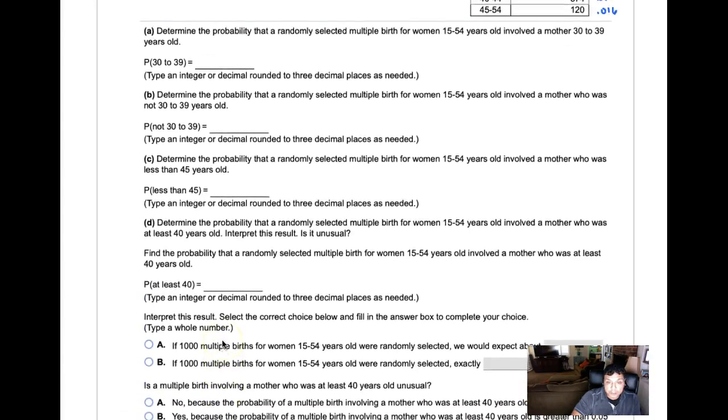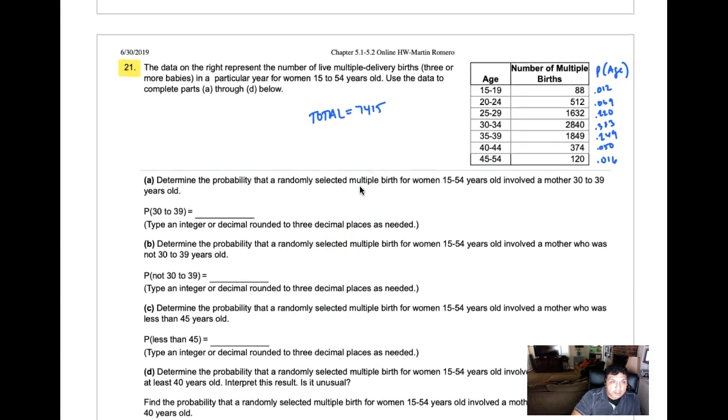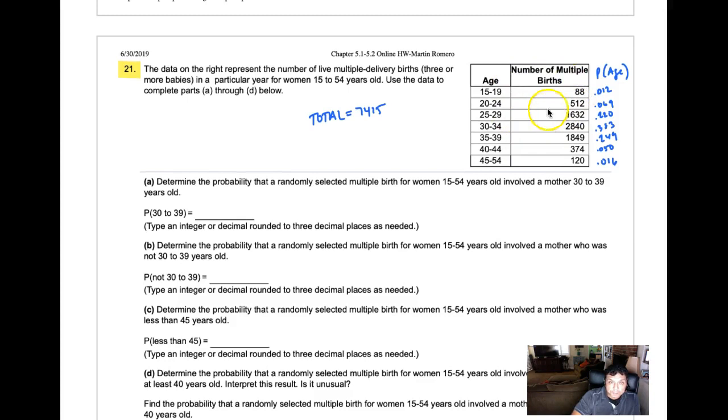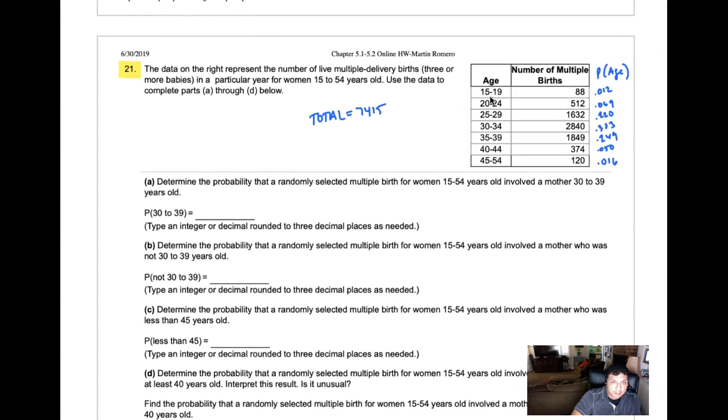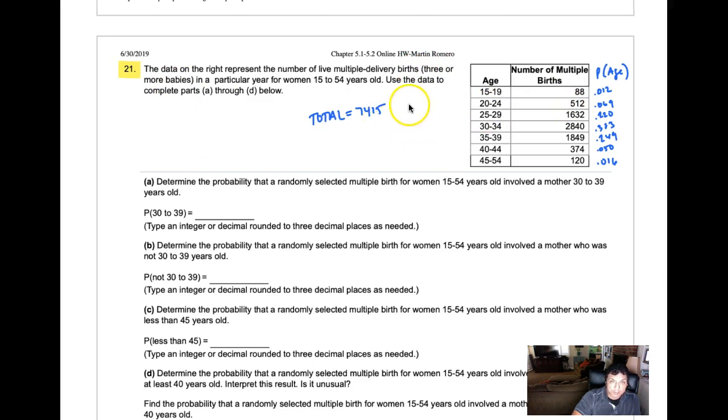We're going to look at problem 5.2.29, which is also problem 21 from the homework. Take a look at this situation where we have a probability distribution created from a frequency distribution. These are the probabilities of the event. In this case, the data is the number of multiple births for females between 15 and 54. For females between 15 and 19, 88 of them had three or more babies at one time, multiple delivery births.